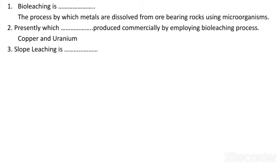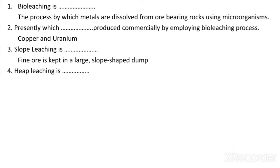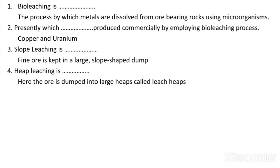Slope leaching is the process where fine ore is kept on a large slope-shaped dump. Heap leaching is the process where the ore is dumped into large heaps — that is why it is called heap leaching.